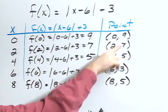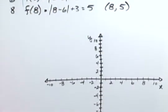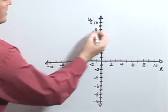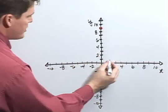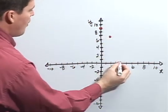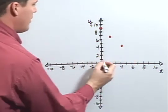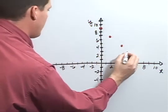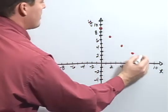Well, notice that looking at my y values, I'm kind of back to the 5. Let's go ahead and plot those points and see what we have. 0, 9, 2, 7, 4, 5, 6, 3, 8, 5.